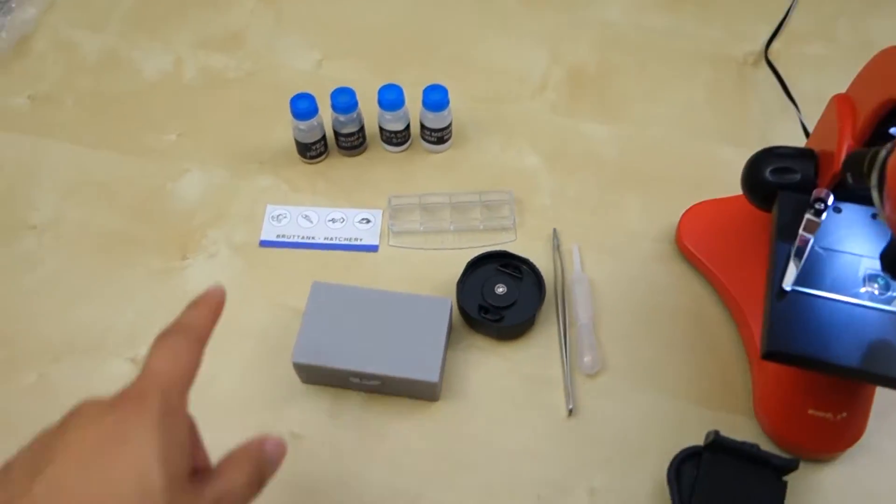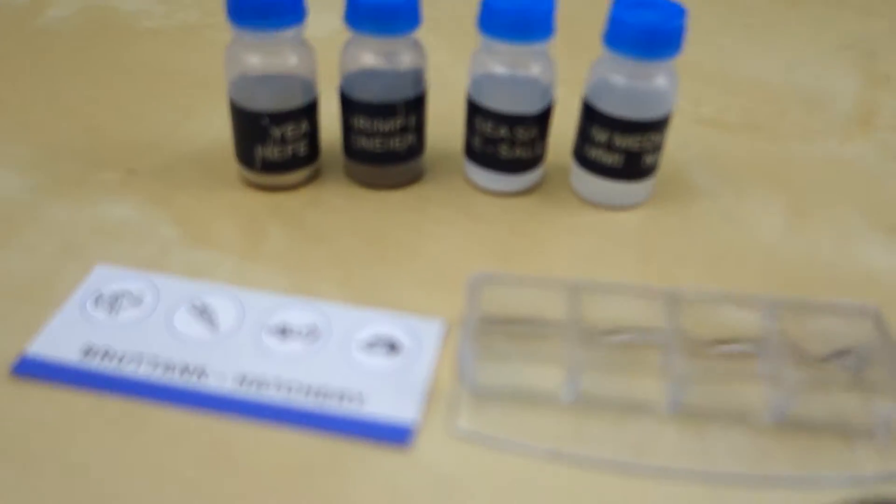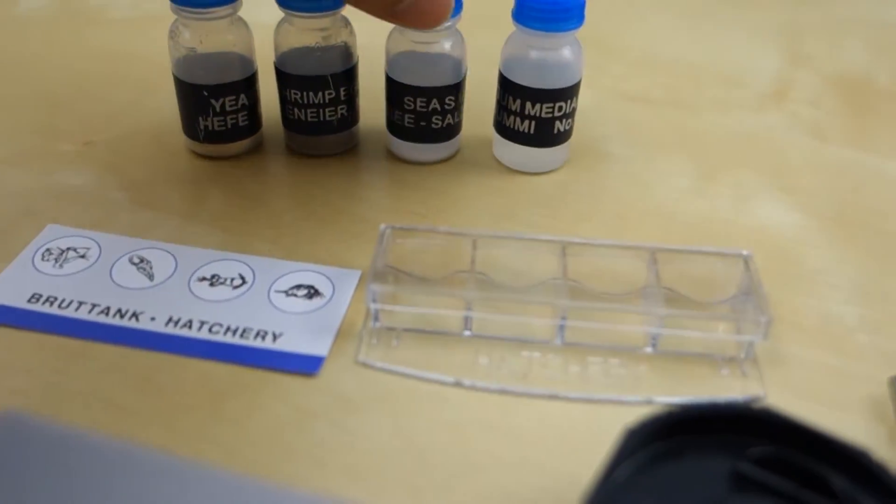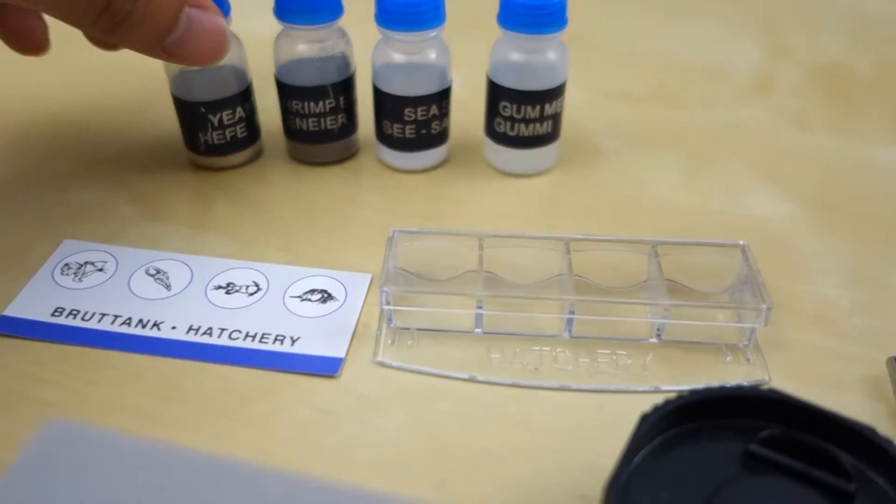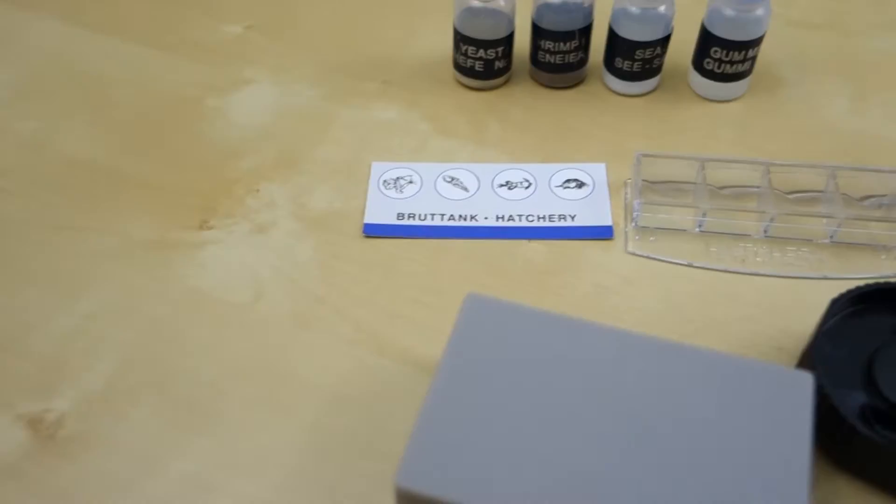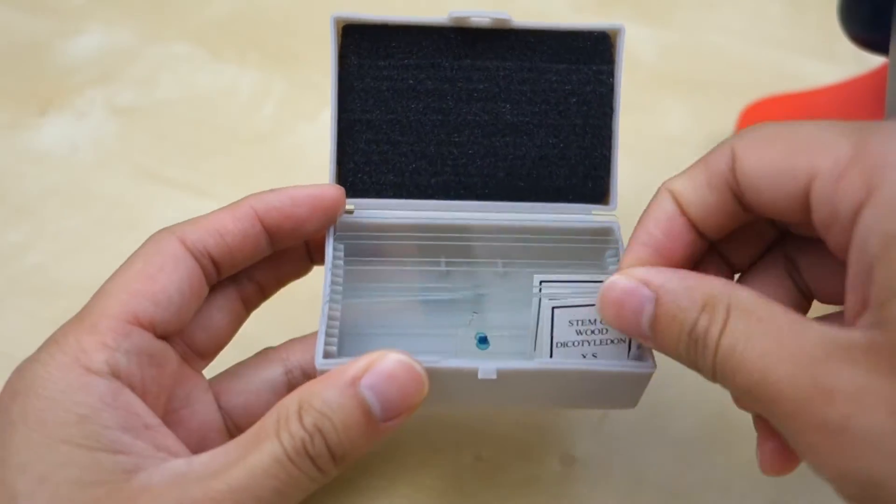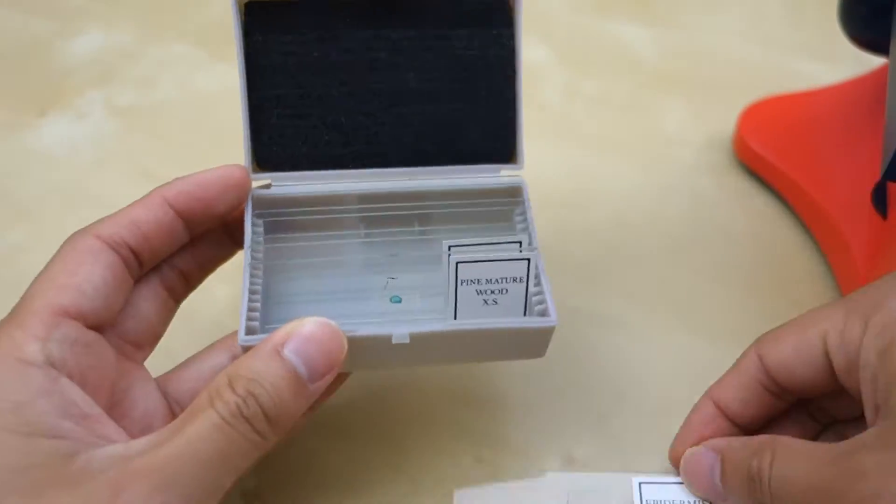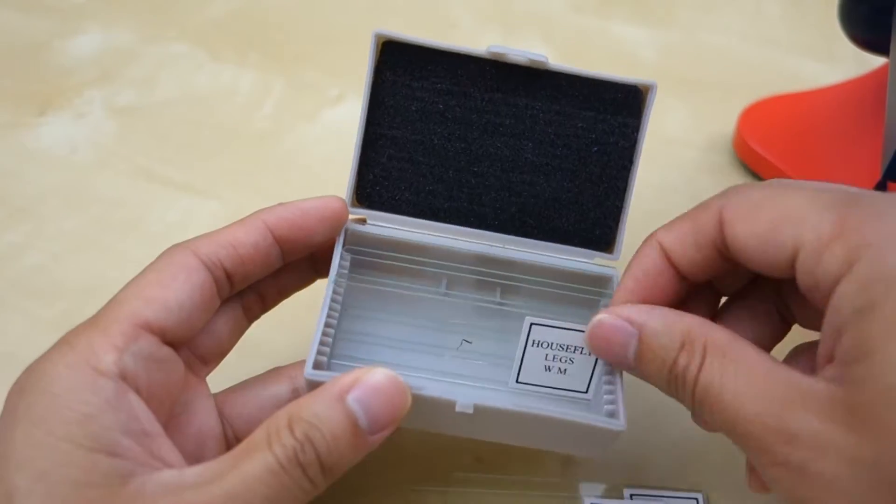And then it comes with some samples here for some of the egg like shrimp, sea salt, you got stuff like yeast. So these are some of the live stuff that you can hatch and then see it under the microscope. You have here a box of different slides and then it also has empty glass slides that you can put your stuff on.